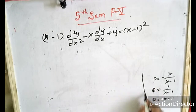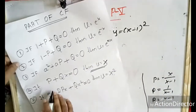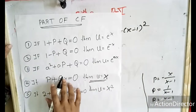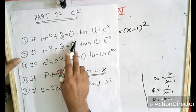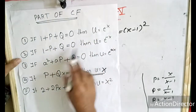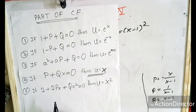To find the part of the complementary function, some formulas are used. By using the formula: if 1 + P + Q equals 0, then u equals e^x. We will use this formula to find the part of the complementary function.